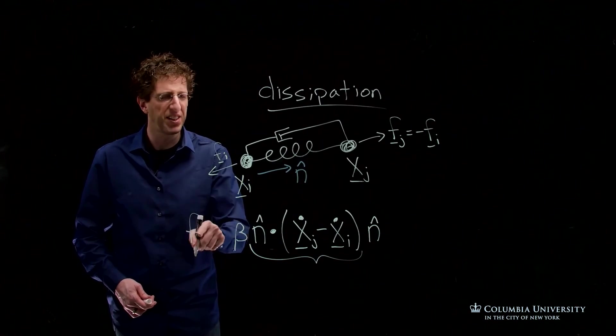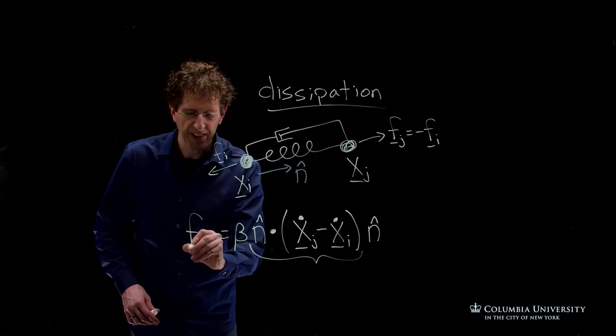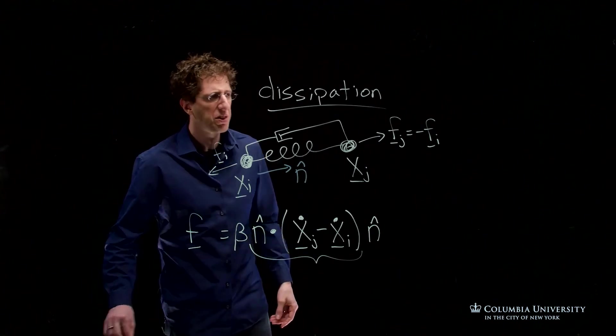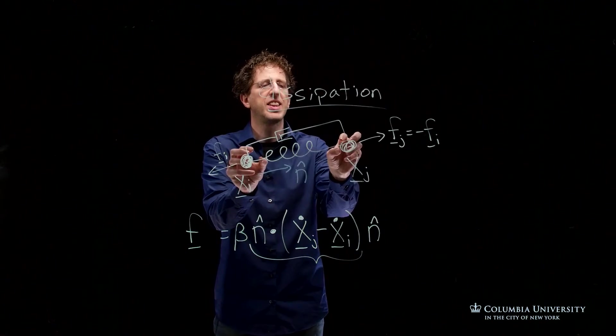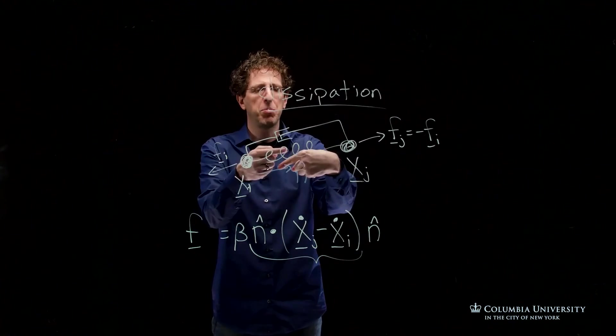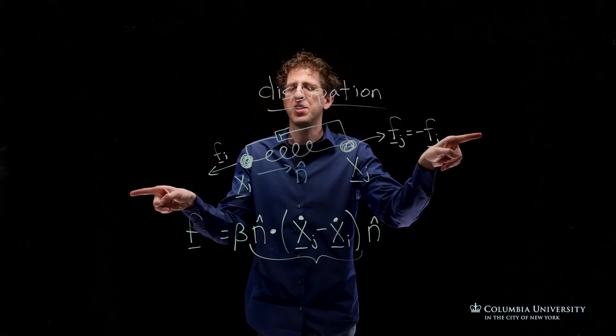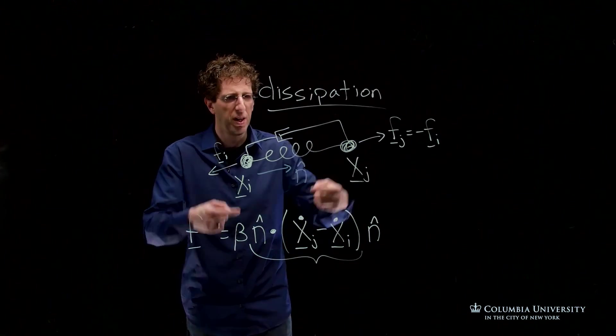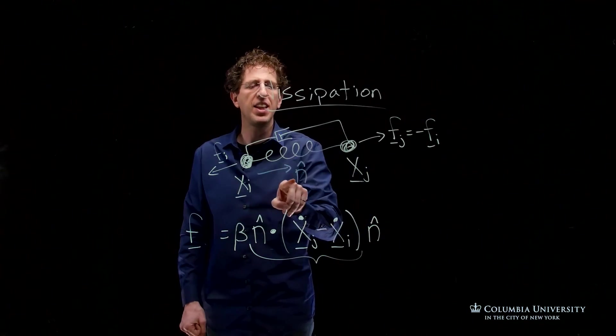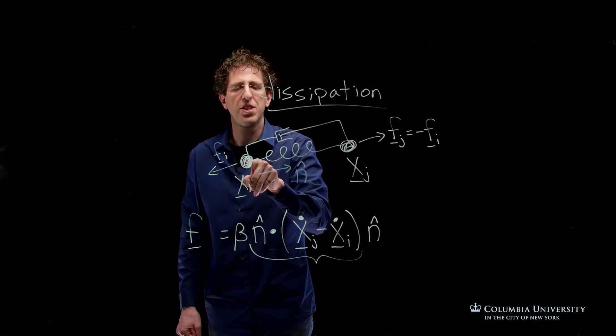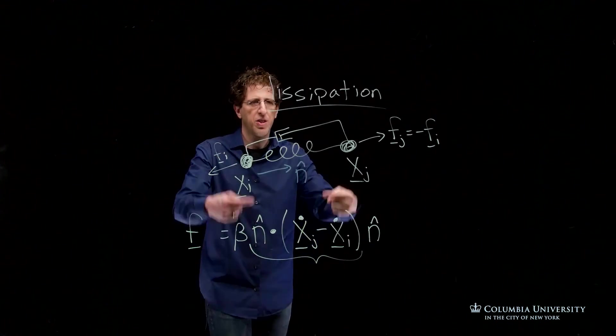If we have a plus sign in front of this, does this correspond to fi or fj? That's the question. Let's look at this to figure this out. Suppose that these particles are approaching each other. If they're approaching each other, we expect a force outward, a force that slows the approach. So we expect that the force acting on j is in the direction n, and the force acting on i is opposing the direction n.